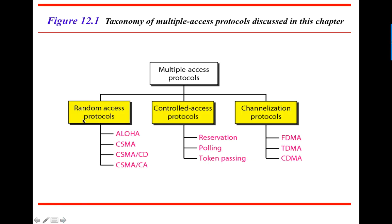We have different types of protocols. Random access protocols allow a device to send and receive anytime — there is no central control, as long as they follow the given rules. Then we have controlled access protocols, where someone is in charge or has a higher priority status. And we have channelization, which addresses how we share the medium — frequency division, time division, or code division. We will look at these in the next videos.